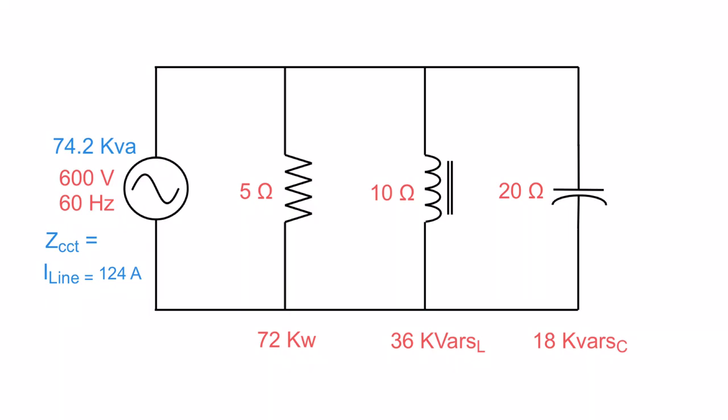Now we've got one more step to take here. We need to figure out what the impedance of the circuit is. If we have source voltage and line current, why don't we just take the source voltage, 600 volts, divide it by 124 amps, and then we will get our overall impedance of the circuit. In this case, it works out to be 4.83 ohms.